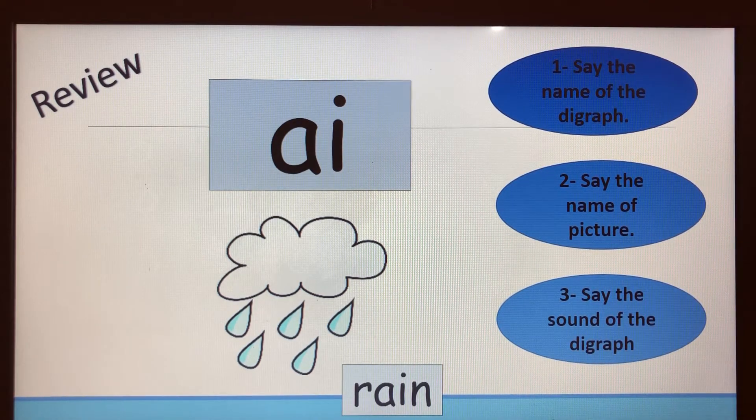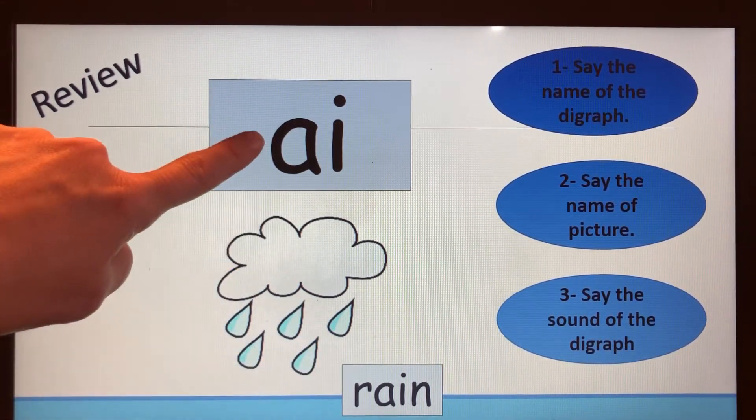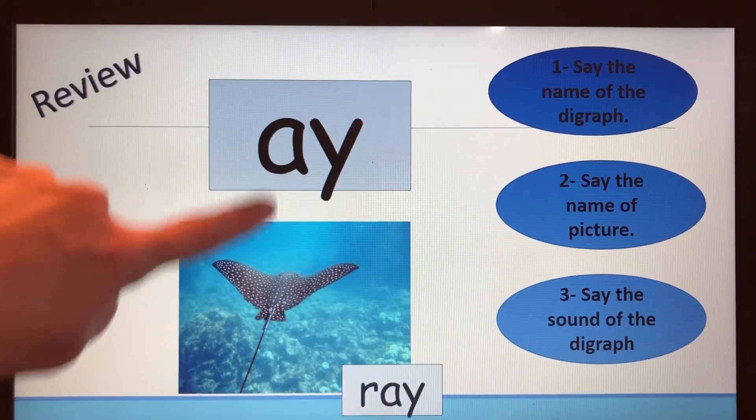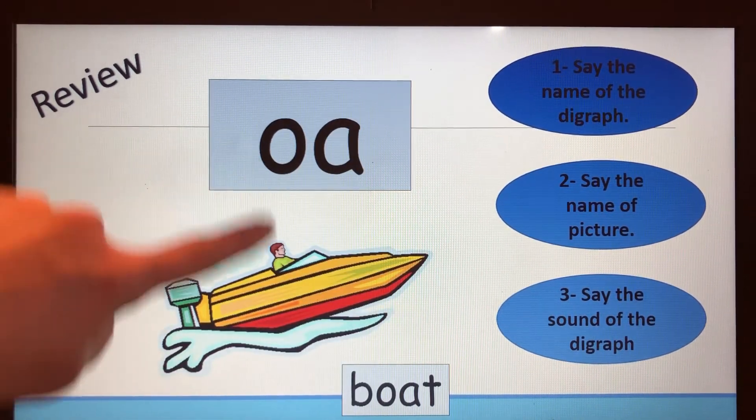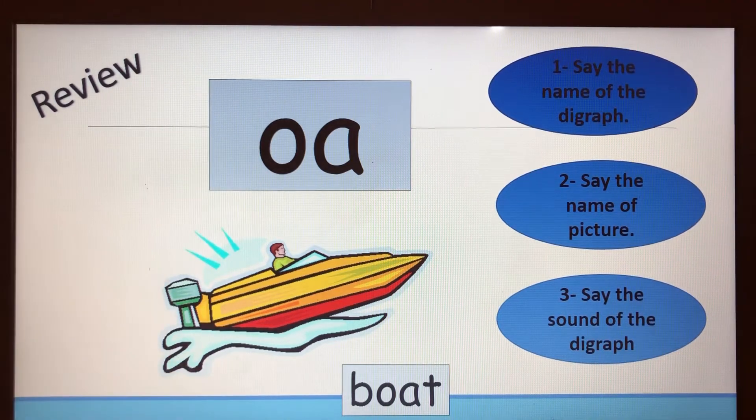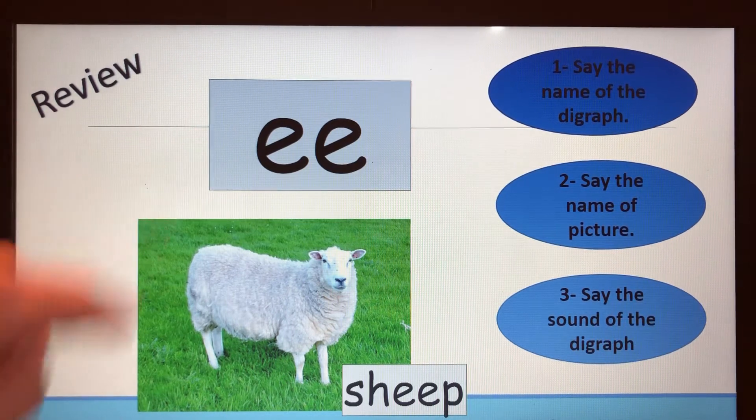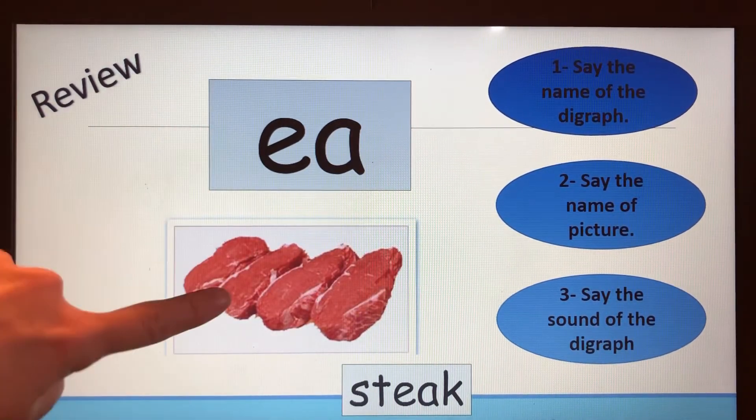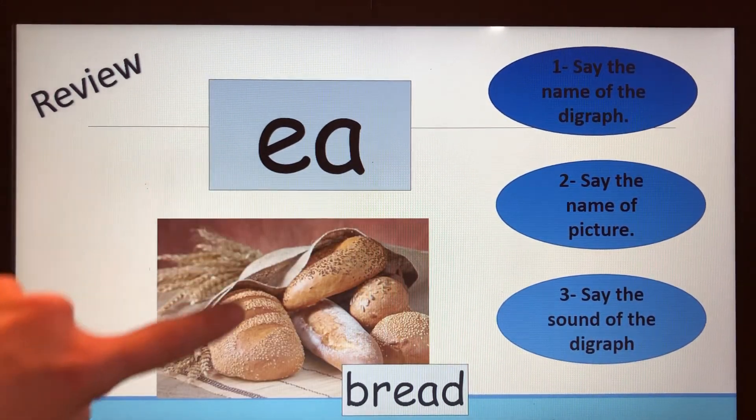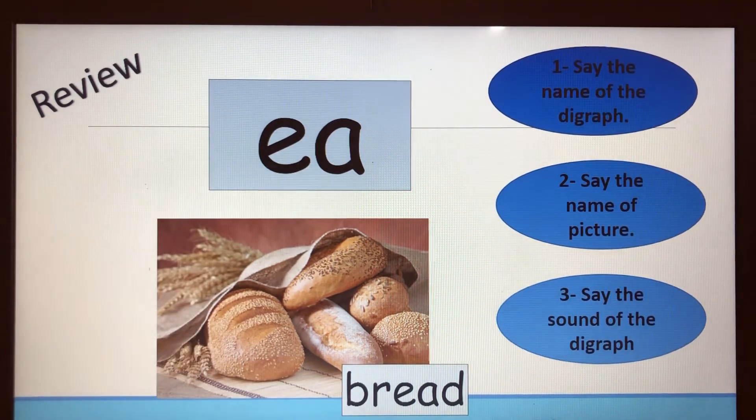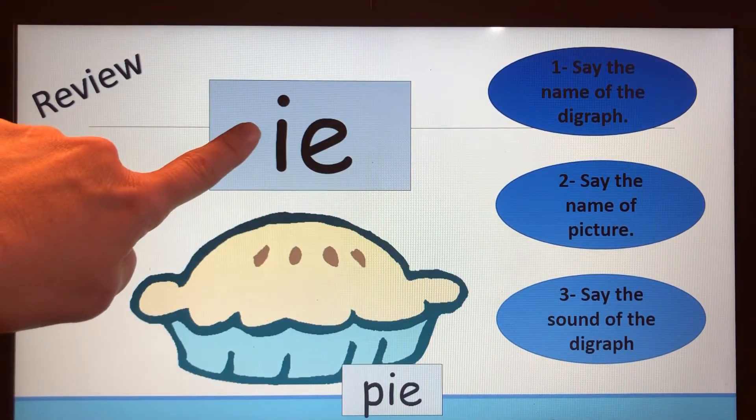Let's say the name of the digraph, the name of the picture, and the sound of the digraph to review these vowel digraphs. Are you ready? AI rain A, AY ray A, OA boat O, EE sheep E, EA steak A, EA bread E, UI fruit OO, IE pie I, IE field E.